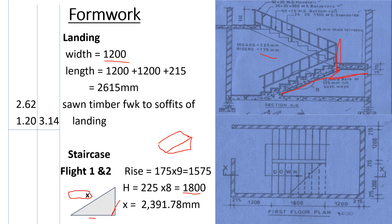For staircase flight two, counting the risers: one, two, three, four, five, six, seven, eight, nine — also nine risers, same as flight one. So the hypotenuse x for flight two is the same as for flight one. We don't need to recalculate; we will simply multiply by two.